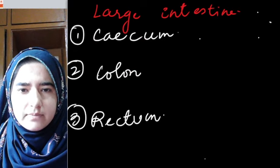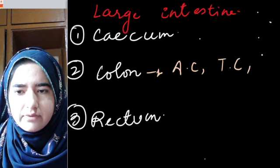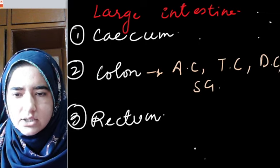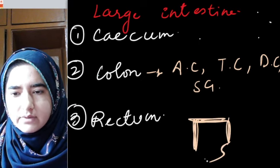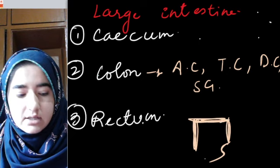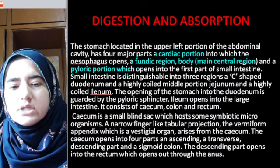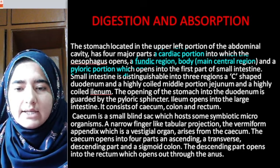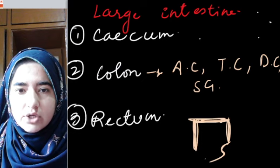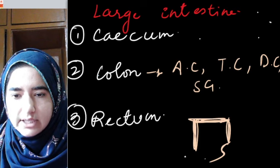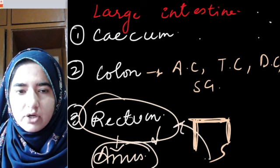The colon has four parts: ascending colon, transverse colon, descending colon, and sigmoid colon. The sigmoid colon is S-shaped. After the sigmoid colon comes the rectum, and the rectum opens up into the anus.